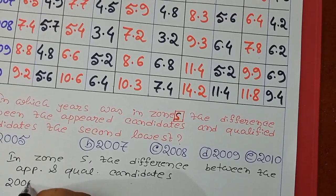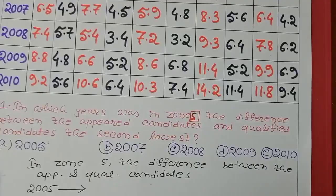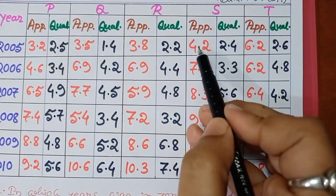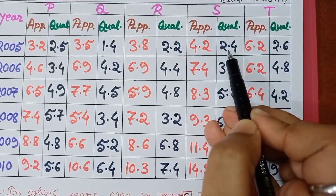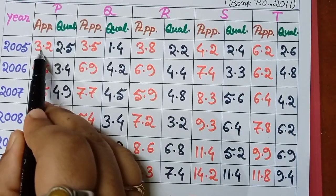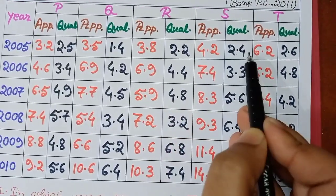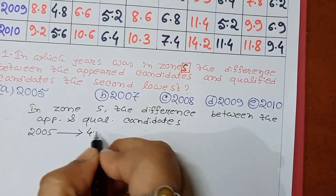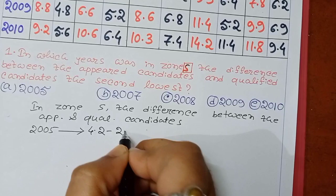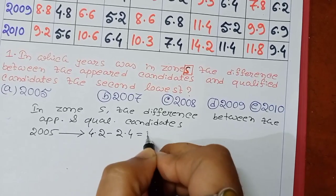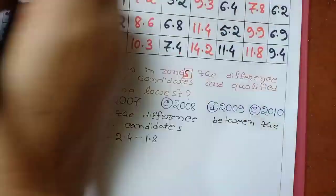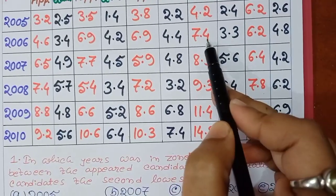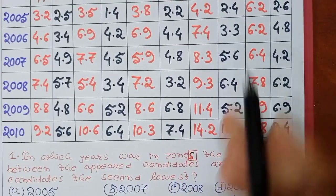In 2005, zone S: 4.2 minus 2.4 equals 1.8. In 2006, zone S: 7.4 minus 3.3.